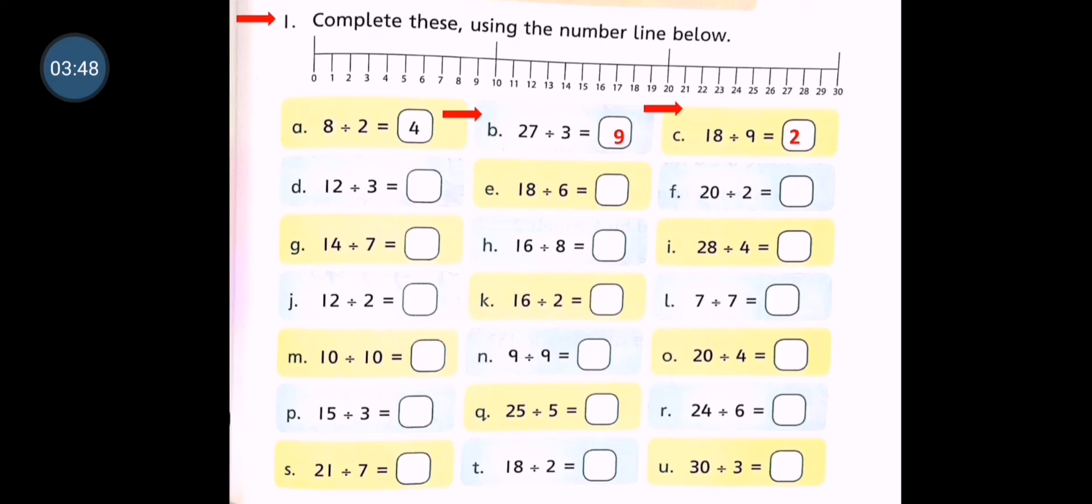Now we will do part D. 12 divided by 3. Now read the table of 3 and we will see where 12 comes. 3 ones are 3, 3 twos are 6, 3 threes are 9, 3 fours are 12. So we will write here 4. 3 fours are 12.